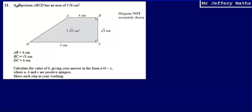This is question 21. Here I'm told that a trapezium ABCD has an area of 5 root 6 centimeters squared. Then I'm given the lengths AB as 4, BC as root 3 and CD as K.